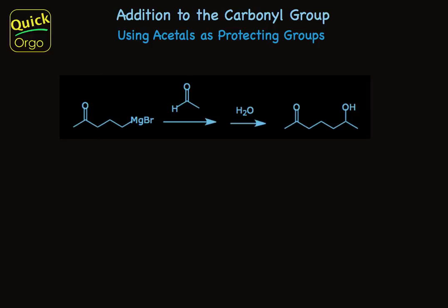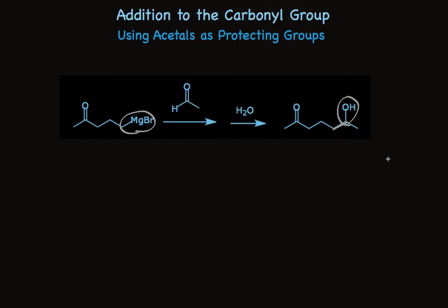Take a look at this proposed synthetic transformation. It uses a Grignard reagent to form an alcohol, while at the same time making this carbon-carbon bond. This is great — there's just one little snag. The Grignard reagent that's supposed to react with the aldehyde can also react with the carbonyl in its own molecule, this ketone. This transformation is not going to work.